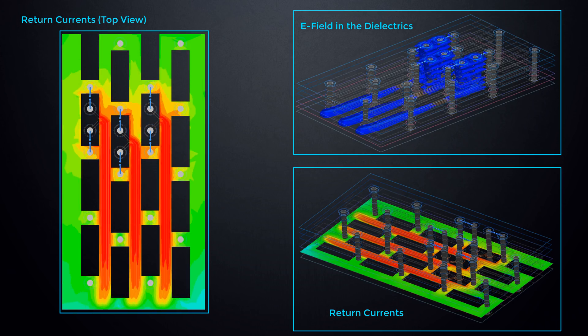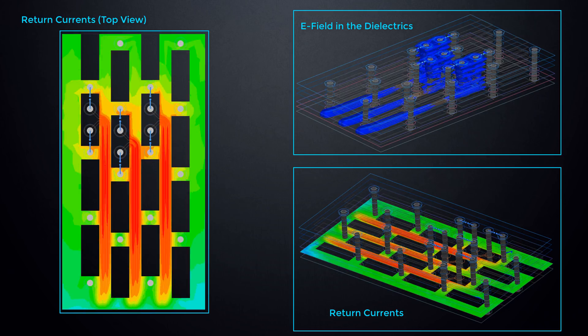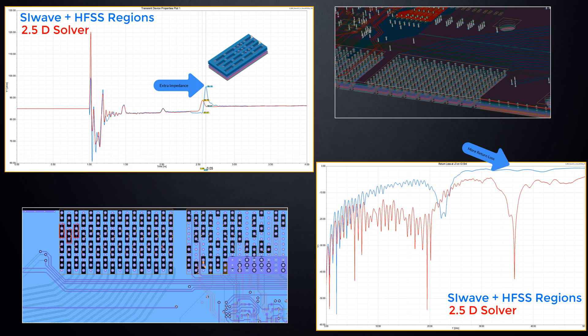Via anti-pads force the return currents into narrower conductive paths, increasing the impedance. SI-Wave with HFSS Regions characterizes the vias and return path more accurately, revealing extra impedance mismatch and more return loss missed by the 2.5D solver.